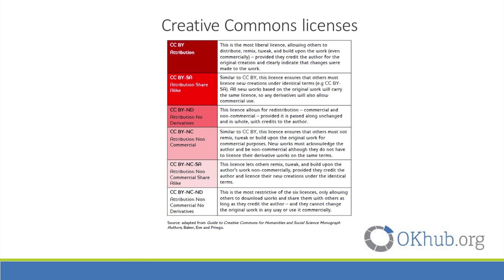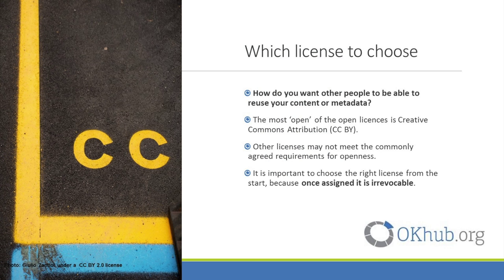The most liberal licence is the Creative Commons Attribution or CC BY licence. And at the other end of the scale, the most restrictive is the Attribution Non-Commercial No Derivatives licence. When selecting an open licence, you should consider how you want other people to be able to reuse your content or metadata. The most open of the open licences is Creative Commons Attribution. Other licences with restrictions on the type of reuse offer more protection of the work in its original form, but they may not meet the commonly agreed requirements for openness set by international bodies such as the Open Definition.